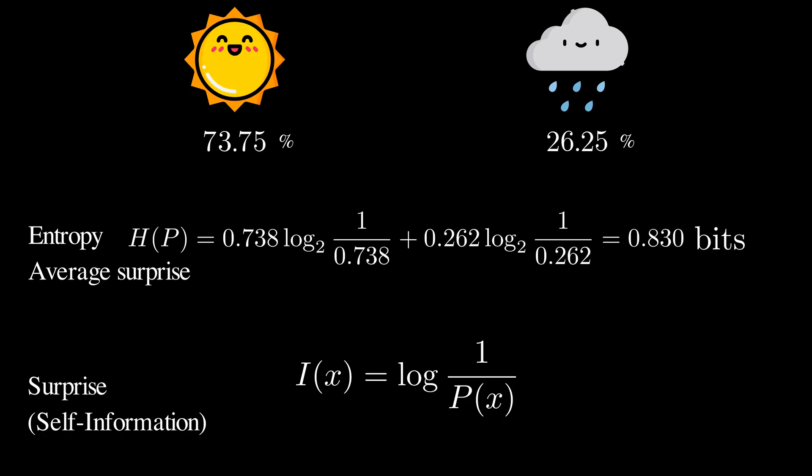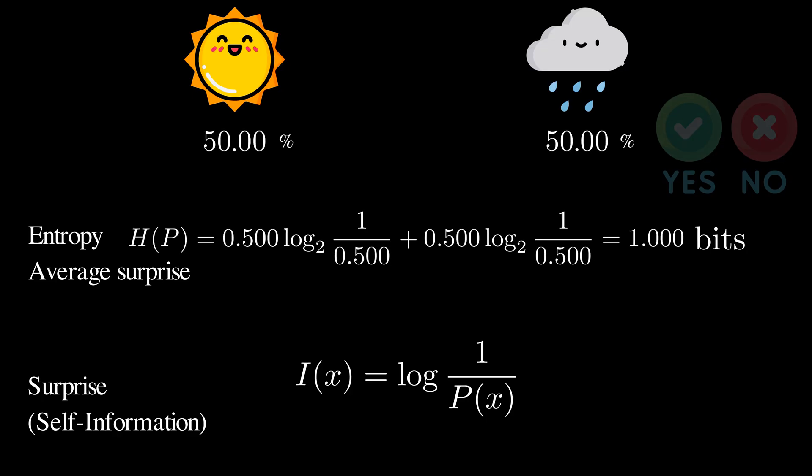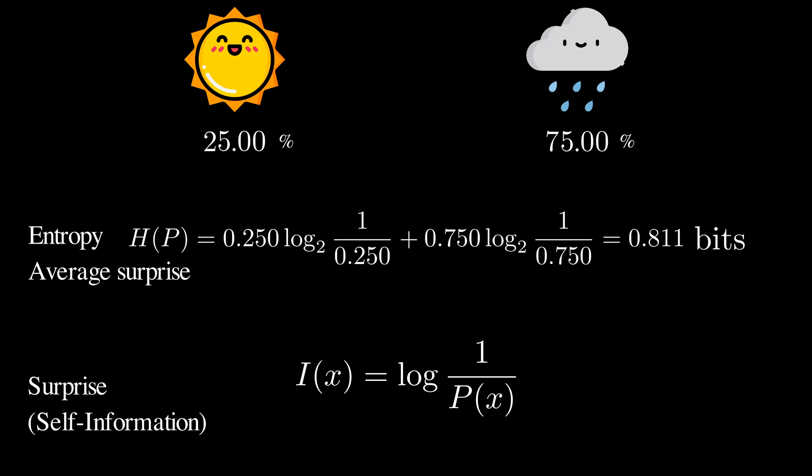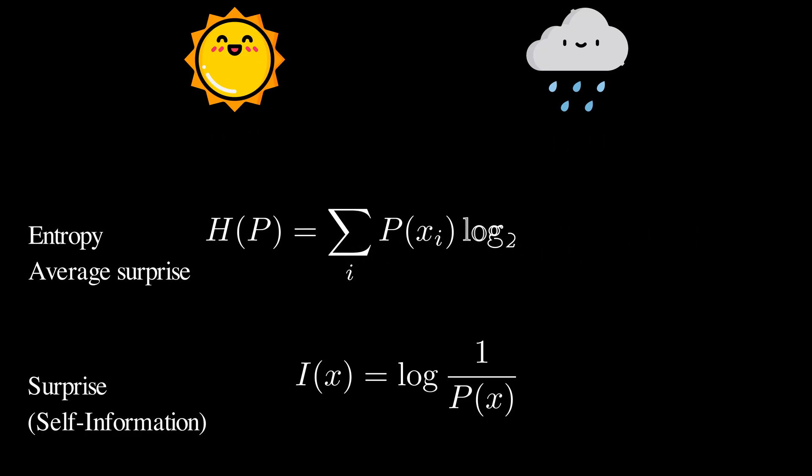When using base 2 logs, we have the unit of information in bits. For example, when all outcomes are equally likely, the entropy is 1 bit. It means that we need one yes-no question to figure out the outcome. If a rainy day is guaranteed with a probability of 1, the entropy is 0 bit. No uncertainty, no surprise.